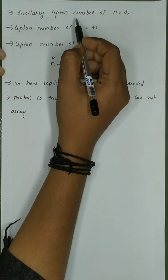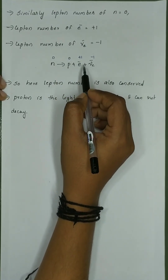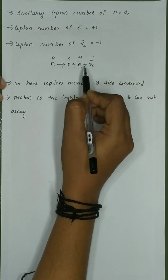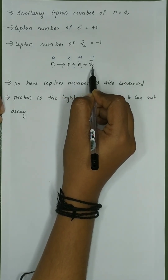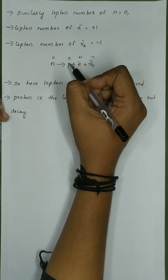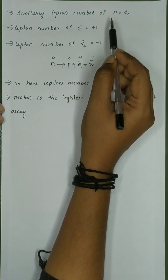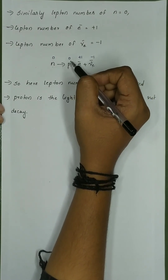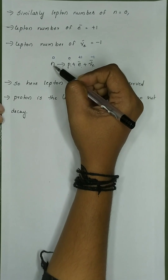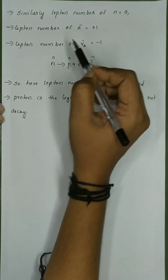Similarly, we check the Lepton number using the same equation: neutron decays to proton plus electron plus anti-electron neutrino. The neutron is a Baryon, not a Lepton, so its Lepton number is 0. The proton is also a Baryon, so its Lepton number is also 0.